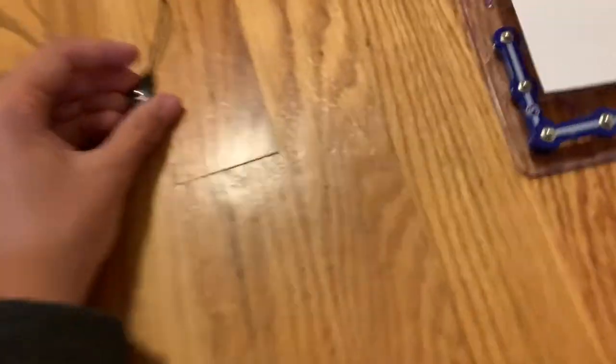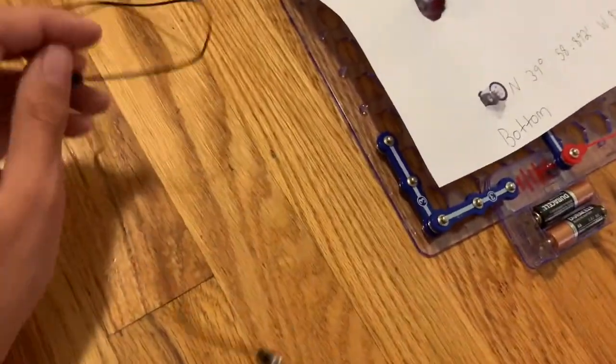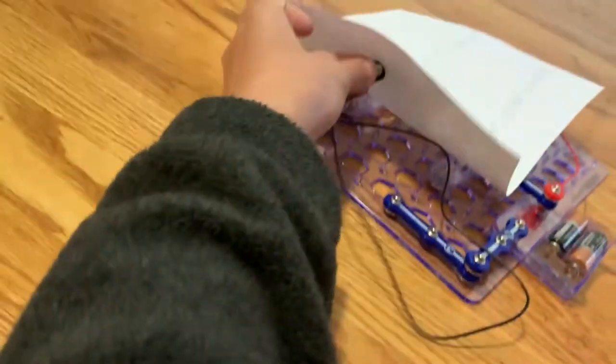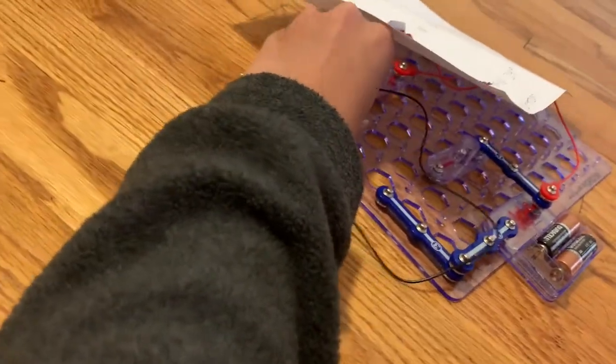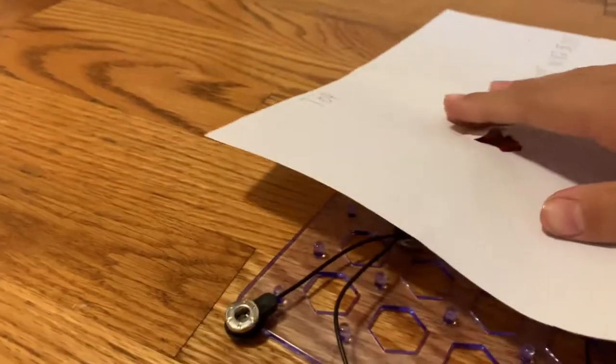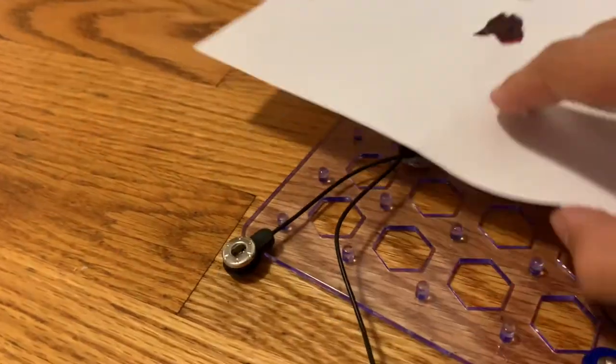And now what you're going to do is you're going to take this black wire right here and attach it down under there to the top light. And, oops, I knocked the paper off, but you're going to put the paper right on the pegs.